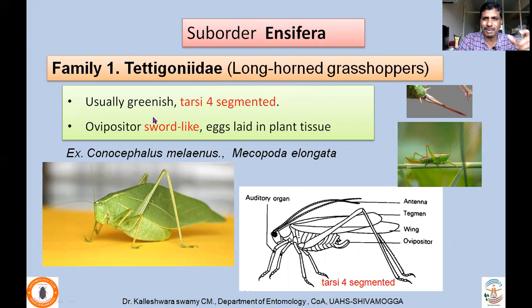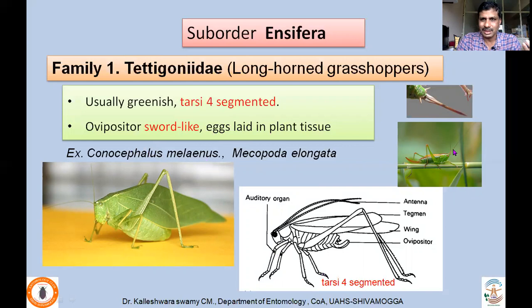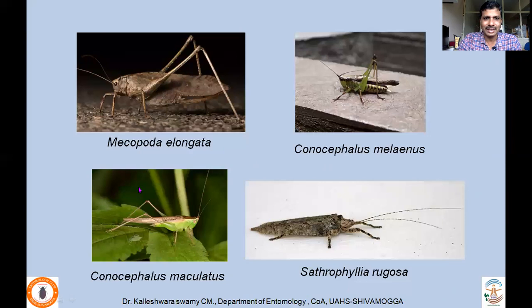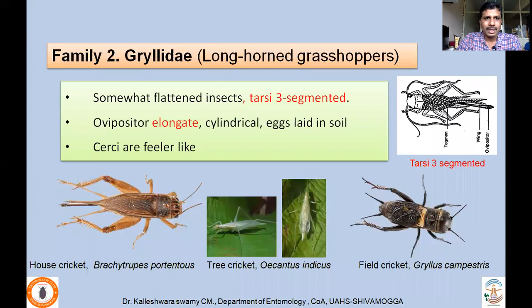Suborder Ensifera, Family Tettigoniidae — long-horned grasshoppers. They are generally greenish in color, though color is not a taxonomic character. The tarsi are four-segmented, and the ovipositor is sword-like. Eggs are deposited in plant tissues. You can recognize them by the long antenna. Two important species: Conocephalus elongatus, very common; Phaneroptera maculata; and Sathrophyllia rugosa, usually found on tree trunks for camouflage.